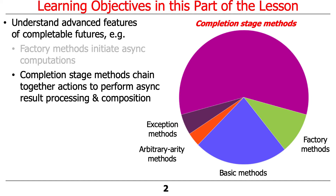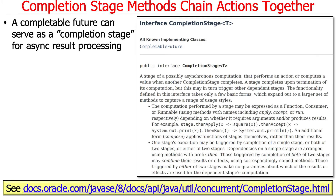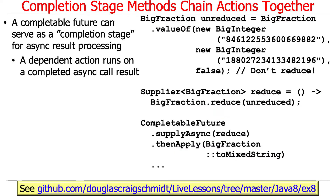They're also used to compose things together in a simple way. A CompletableFuture can serve as a completion stage for async result processing. CompletionStage has a definitive meaning — it's an interface, and it's a stage of possibly asynchronous computation that performs an action or computes a value when another completion stage completes. It allows dependent actions to run when previous asynchronous calls complete, and the dependent action then processes the results of the completed asynchronous operation.